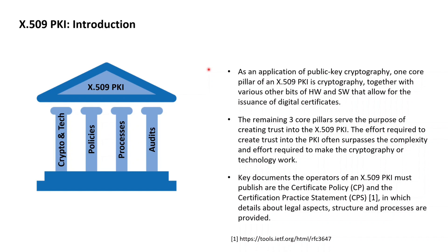Having dealt with the technological part of an X509 PKI in the first pillar, the remaining three core pillars serve the purpose of constructing trust in the X509 PKI. In order to create trust, an X509 PKI has to establish clear policies on the structure, governance, processes, and legal elements of the functionalities it provides, with these policies captured and publicly provided in a certificate policy document, usually abbreviated as CP, with this CP document having a structure and format as defined in RFC 3647.